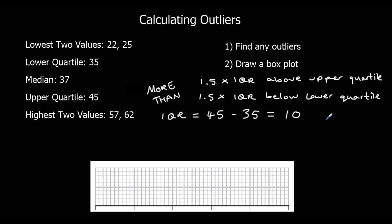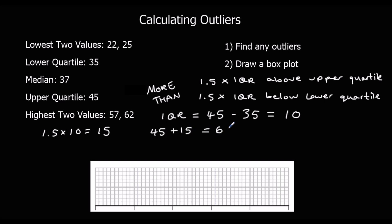So that means an outlier is any number more than 1.5 times 10 above the upper quartile, or more than 1.5 times 10 below the lower quartile. So 1.5 times 10 is 15. We're looking for any number more than 15 above the upper quartile. The upper quartile is 45, so 45 plus 15 is 60. Any number above 60 is an outlier, so 62 is an outlier.